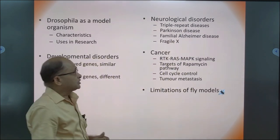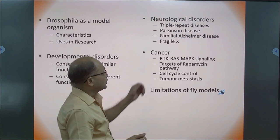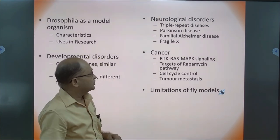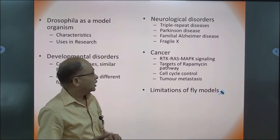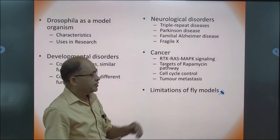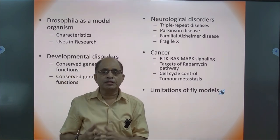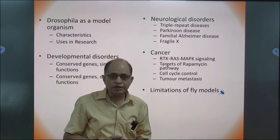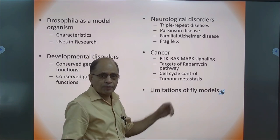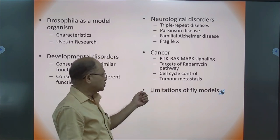There are several neurological disorders we can study, like triple repeat diseases, Parkinson's, Alzheimer's, and Fragile X syndrome. In cancers, we have different models in Drosophila and one can use those as well.